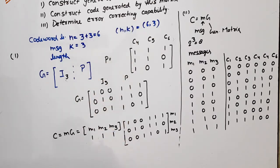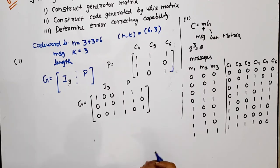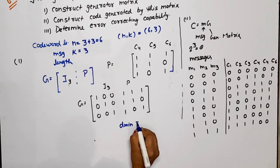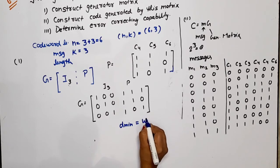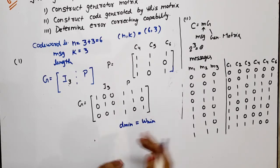For finding the error correcting capability, we need to know D_minimum. D_minimum is the minimum Hamming weight of any non-zero code word. So D_minimum equals the minimum weight, excluding the all-zero code word.